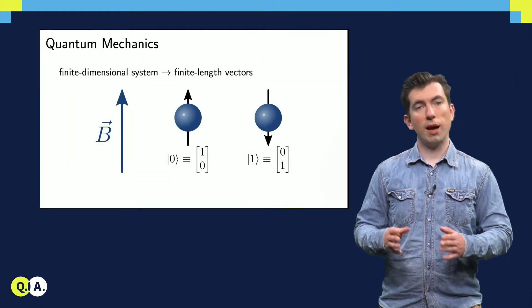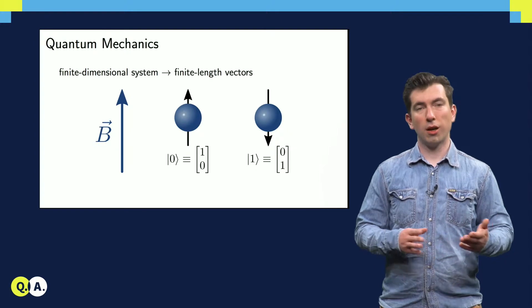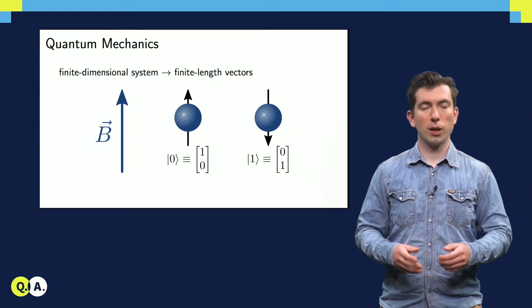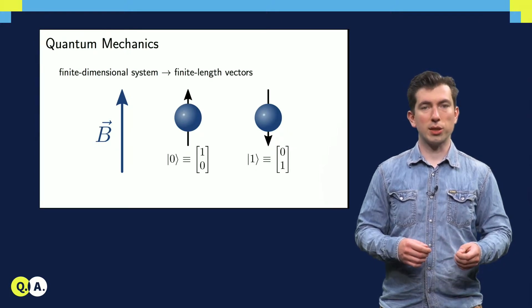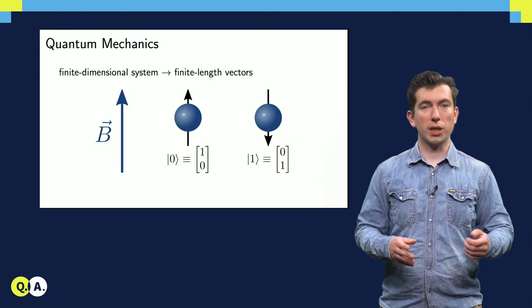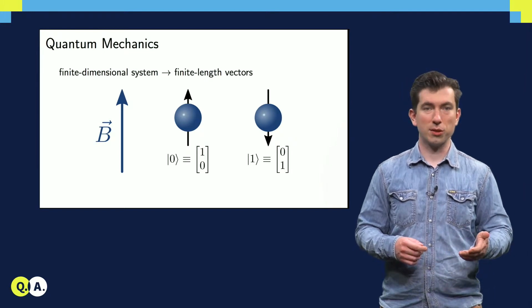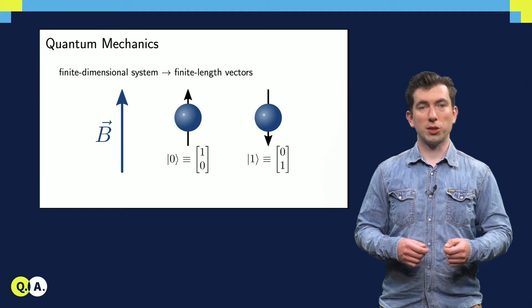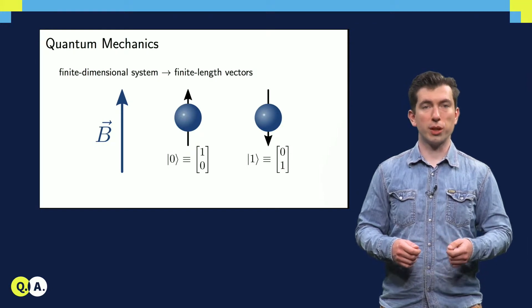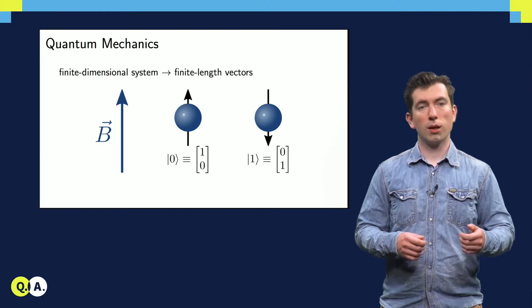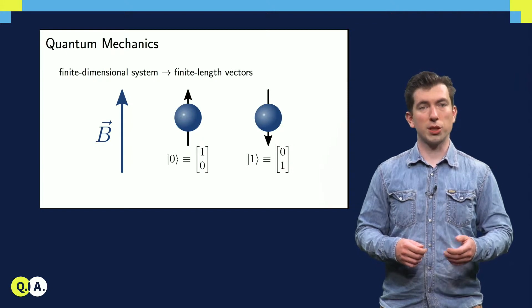Some devices have finite dimensional state spaces, unlike the harmonic oscillator. This allows us to express the basis states as column vectors without using an infinite amount of space, which is very nice. Such devices include the spin one-half, which is shown in this figure. Now that's it for the representation of single qubit states.